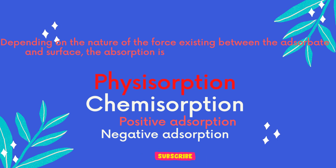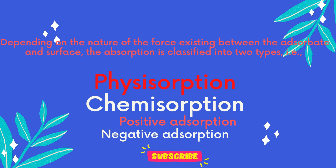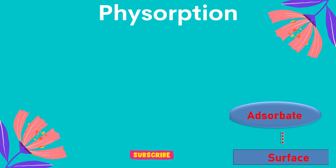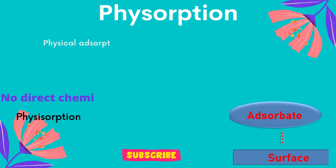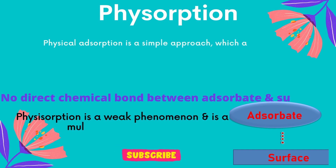The two types are physisorption or physical adsorption, and chemisorption or chemical adsorption. In addition to this, sometimes adsorption can be classified as positive adsorption and negative adsorption. Physical adsorption is a simple approach which attaches the target substance on a surface.